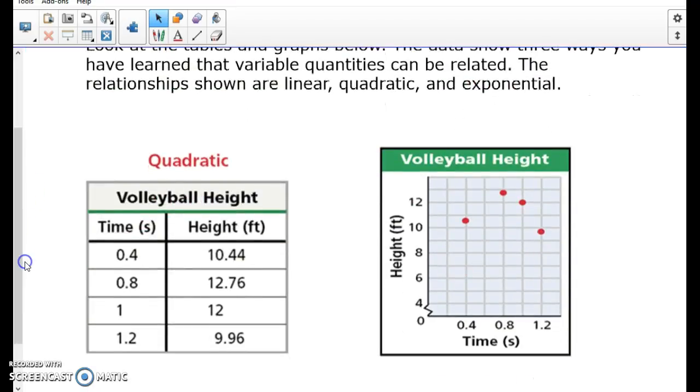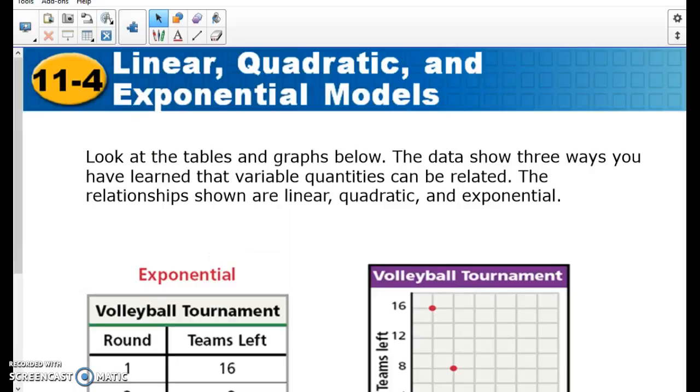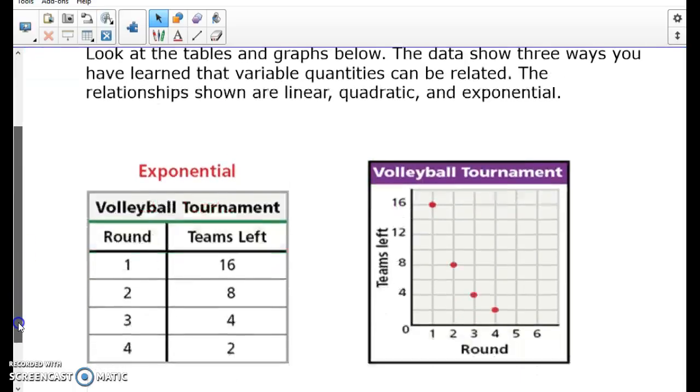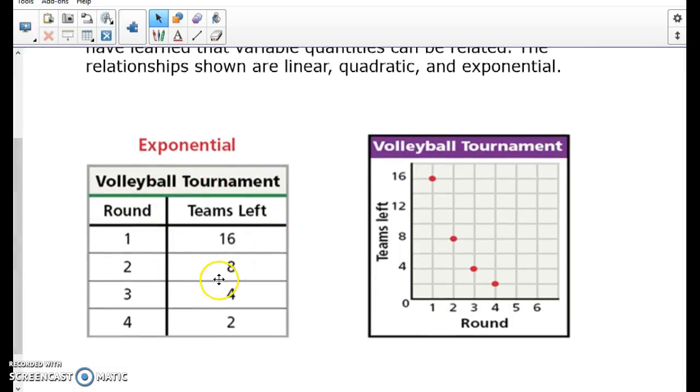When it's quadratic, usually there's going to be a rate of a square pattern. Usually hard to see with numbers, so probably graphing would probably be one of the better ways to see this. And remember exponential is going to be a multiplying pattern. So multiplying by a half, multiplying by a half, multiplying by a half.